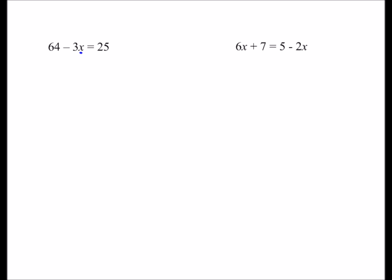The first example is 64 minus 3x equals 25. The aim of solving linear equations is to get x on its own — we want x equals. Normally we're aiming to get x on one side and all the numbers on the other side. To get positive x's, I'm going to add 3x to both sides. So 64 minus 3x plus 3x — the minus 3x and plus 3x cancel — and I get 25 plus 3x.